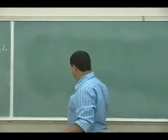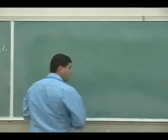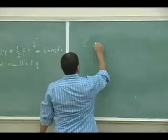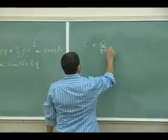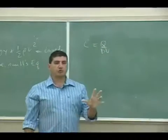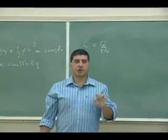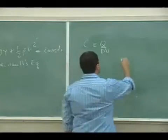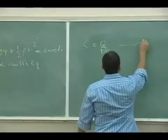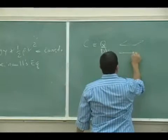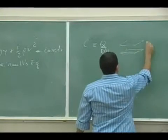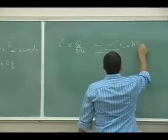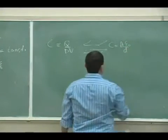The next thing we want to be able to do, just like we did for capacitors — remember for capacitors we said C is Q over delta V — and then we found the equation for the capacitance of different kinds of capacitors, like parallel plate. Its capacitance came out to be A times epsilon-zero over D.